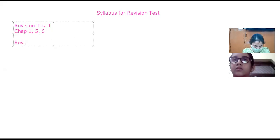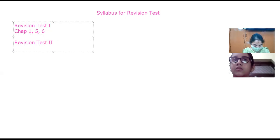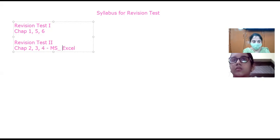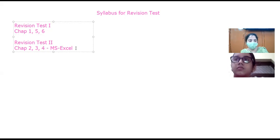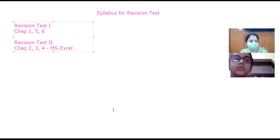For revision test two, there are three chapters again — chapter number two, three, and four. That is for MS Excel; all three chapters for Excel will come in the second revision test. The computer revision test is on Monday. The next Monday coming will be your first revision test, and the second revision test will be on the following Monday — I think the 30th.